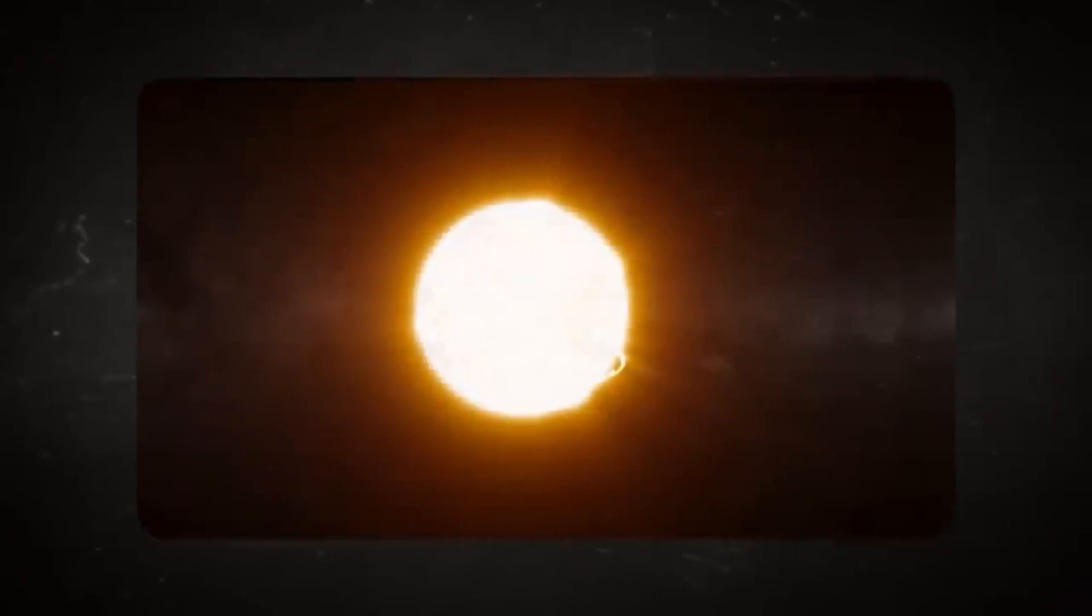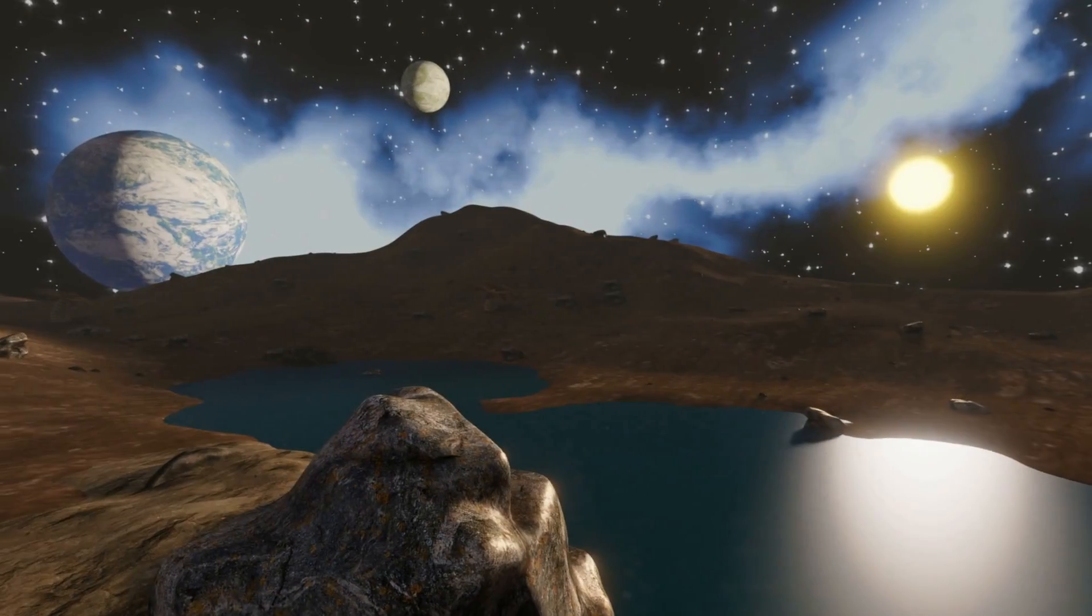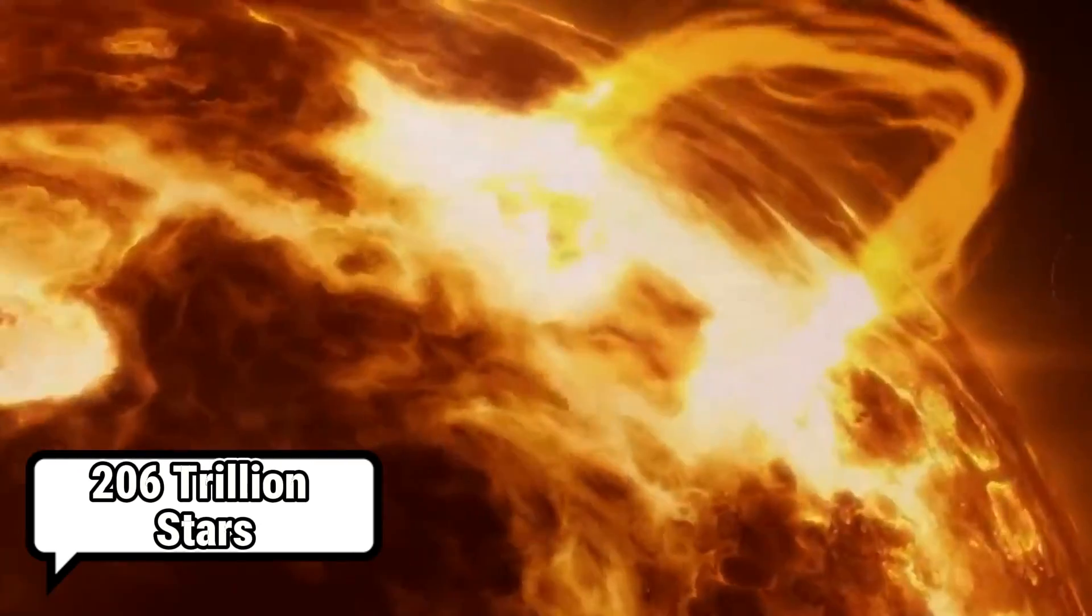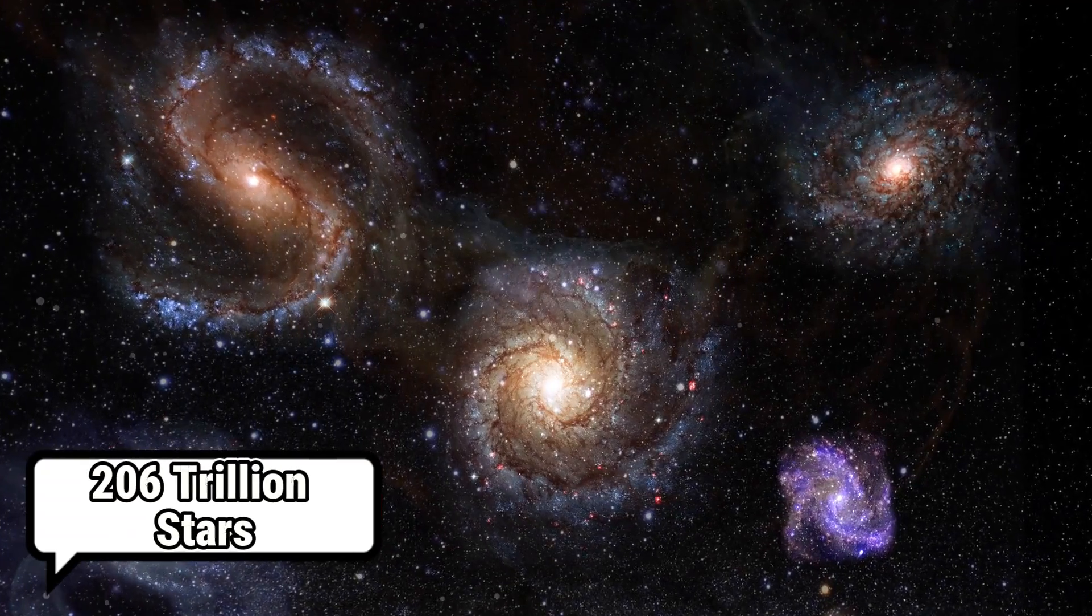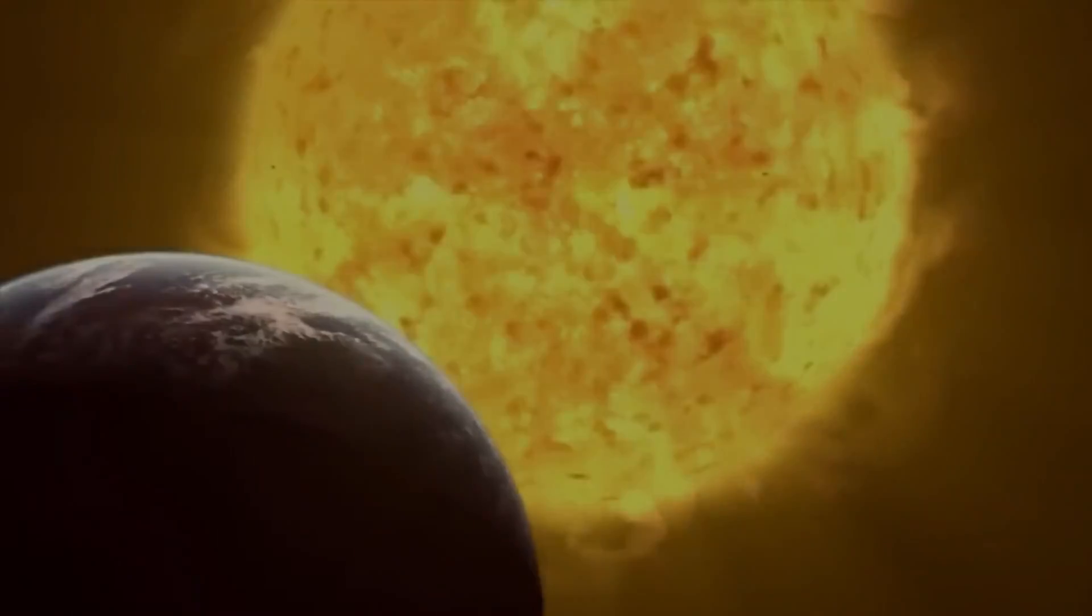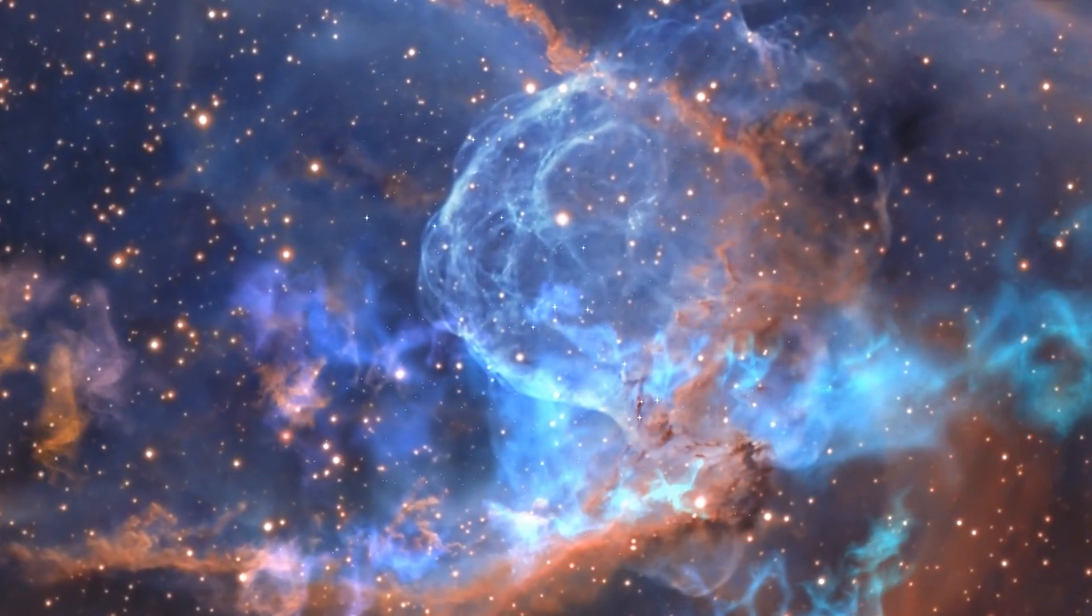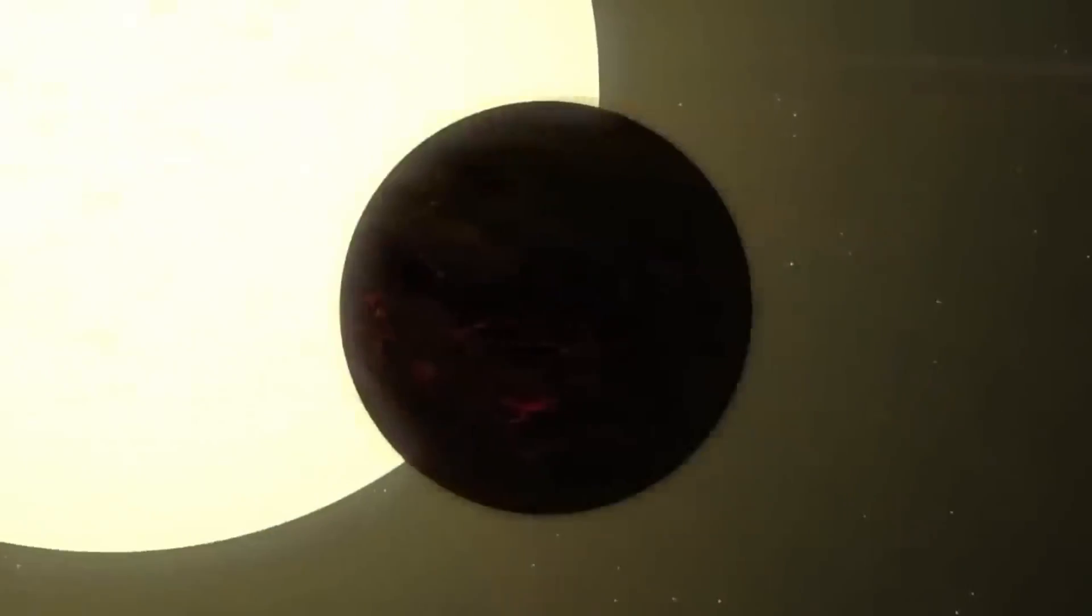As we explore the vastness of space, we encounter numerous exoplanets, worlds orbiting stars other than our Sun, within an astounding 206 trillion stars scattered across the universe. The possibilities for these exoplanets appear boundless. Some of these planets wander freely through space, akin to cosmic nomads.